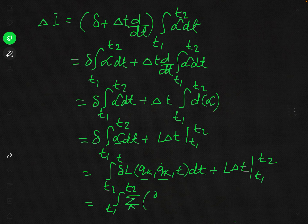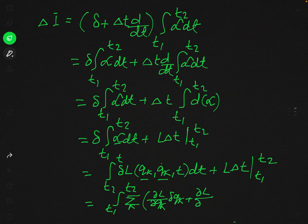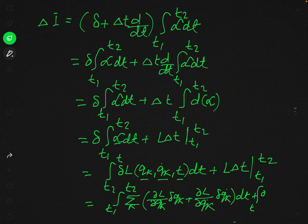From the Lagrange equation for conservative systems, we know that del L / del q_k minus d/dt (del L / del q_k dot) equals zero. That is, del L / del q_k equals d/dt (del L / del q_k dot). We now substitute this Lagrange equation into our expression, replacing del L / del q_k with d/dt (del L / del q_k dot).